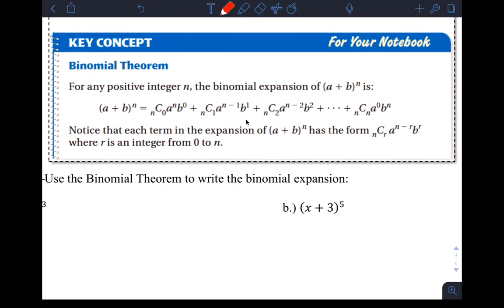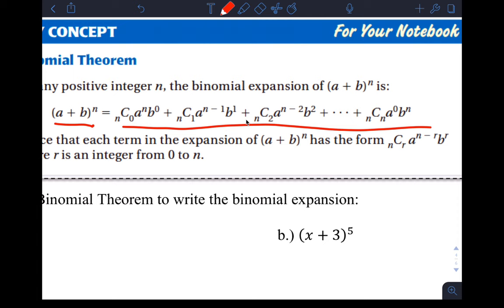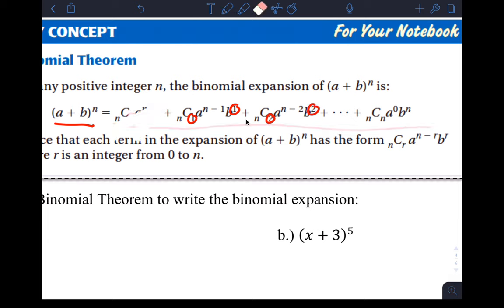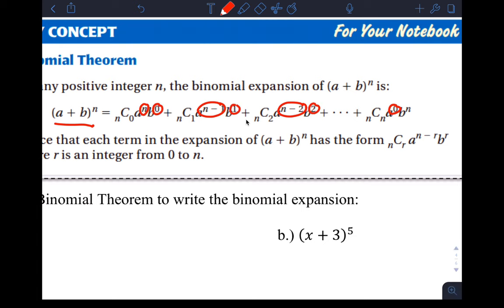The binomial theorem says: if I have (a + b) to the n, here's how the expansion works. If you look carefully you can see a clear pattern that emerges. We always have n choose 0 to start, and the combination index also matches the power of the second term — so n choose 1 goes with b to the 1, n choose 2 goes with b to the second. The powers of a decrease by 1 in every term, and the powers of b increase.